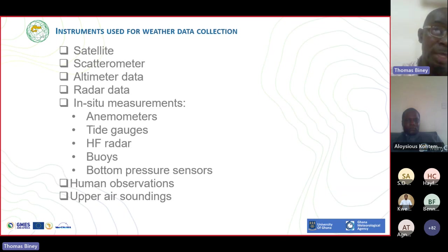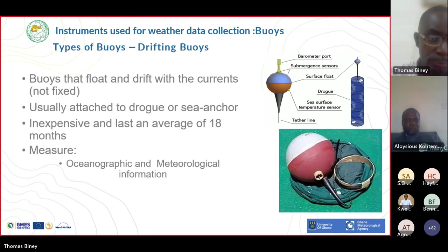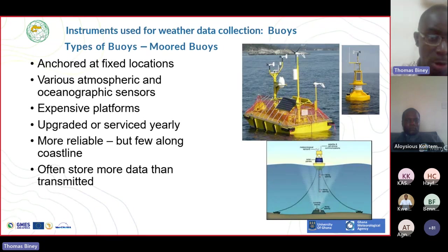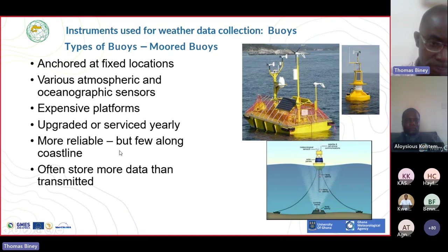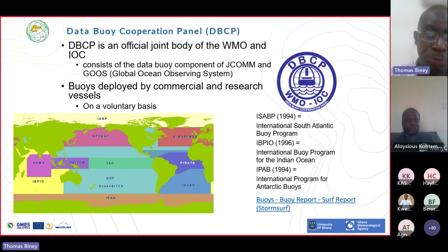If you check Copernicus, for instance, we have near real-time data there which can help in your forecast if you don't have observed data in your area. This is a typical example of a drifting buoy, which floats and drifts with the currents over the ocean. And we have the moored buoy or the anchored buoy, which also collects various atmospheric and oceanic parameters. It has sensors installed which collect data for the area in which it has been installed. If you need more information on data buoys, you can check from the Data Buoy Cooperation Panel - I have the link - which shows where buoys have been deployed in and around the world.